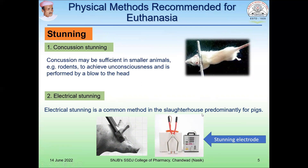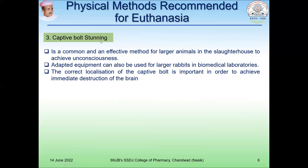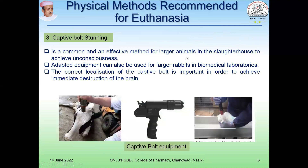The second method is electrical stunning, which is commonly used in slaughterhouses, predominantly for killing pigs. An electrode is placed at the head site and current is released, which produces stunning or unconsciousness and death in the animal. The third method is captive bolt stunning, a common and effective method for large animals in the slaughterhouse to achieve unconsciousness.